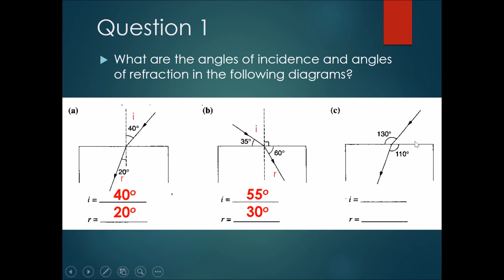For the final question, if you did not draw a normal line you probably got it wrong. Draw the normal line first, then indicate the angle of incidence and angle of refraction. Here, 130 degrees minus 90 degrees gives the angle of incidence as 40 degrees. And 110 degrees minus 90 degrees gives the angle of refraction as 20 degrees.